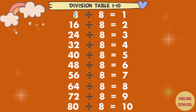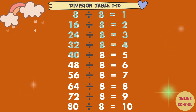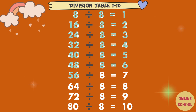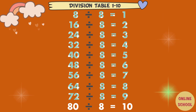8 divided by 8 equals 1. 16 divided by 8 equals 2. 24 divided by 8 equals 3. 32 divided by 8 equals 4. 40 divided by 8 equals 5. 48 divided by 8 equals 6. 56 divided by 8 equals 7. 64 divided by 8 equals 8. 72 divided by 8 equals 9. 80 divided by 8 equals 10.